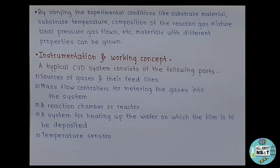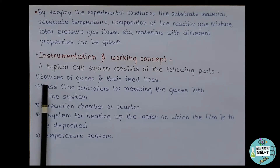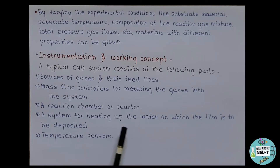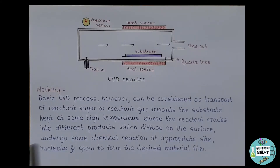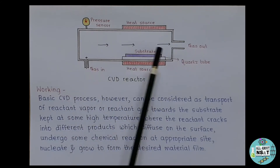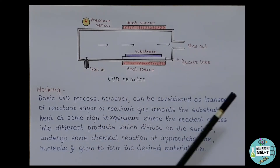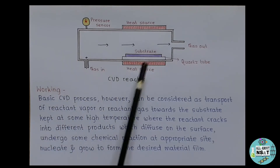A typical CVD system consists of the following parts: sources of gases and their feed lines, mass flow controllers for metering the gases into the system, a reaction chamber or reactor, a system for heating up the wafer on which the film is to be deposited, and temperature sensors. The CVD reactor is equipped with gas sources, feed lines, a pressure sensor, and heating sources at both ends. Inside the reactor there is a quartz tube on which the substrate is placed.